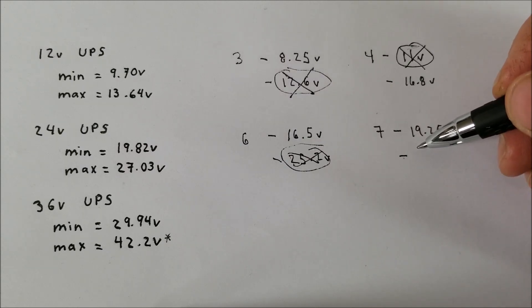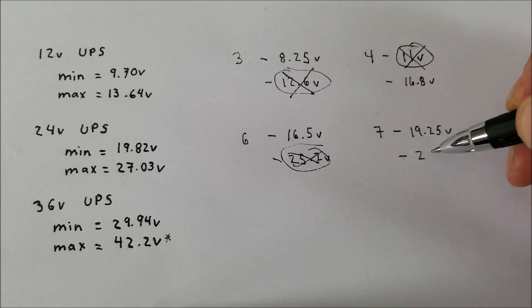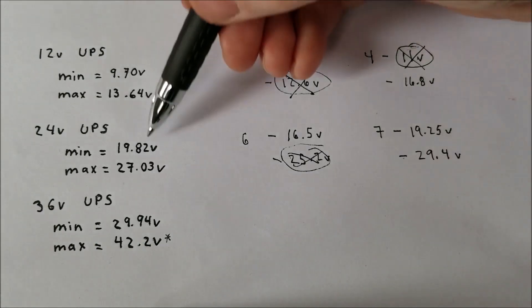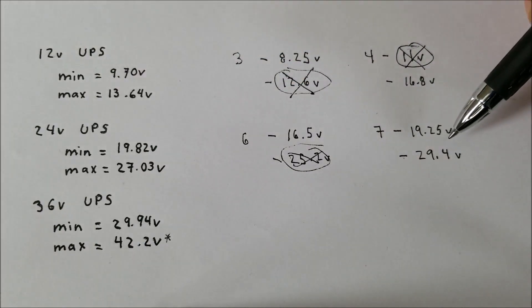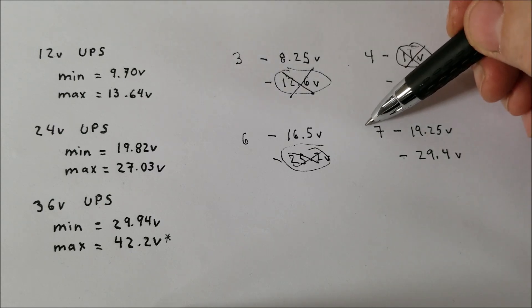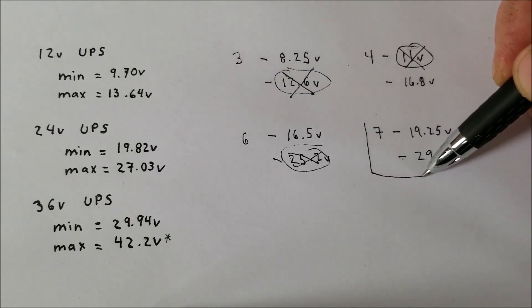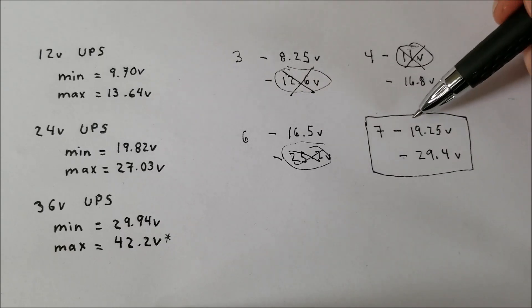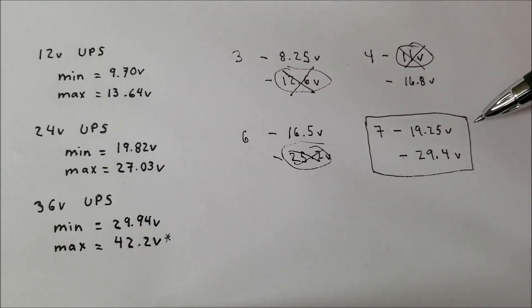Now for the maximum, 4.2V times 7, we get 29.4V. So that is higher than 27. Therefore, that would also work. So here we have a combination, which could be safely used in this UPS. So 7 cells in series will get you a minimum voltage of 19.25V and a maximum of 29.4V. So here we have a combination that works.